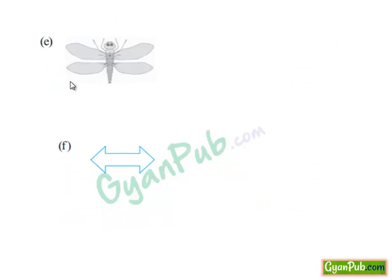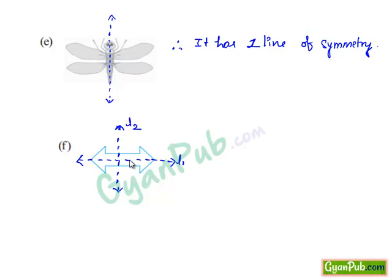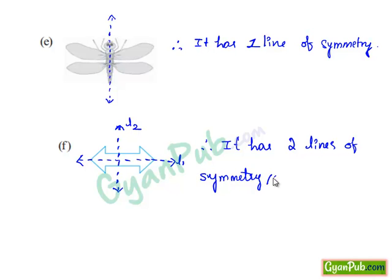If we see part E, here is a butterfly and it can be divided only vertically to make it identical. Therefore it has one line of symmetry. Seeing part F, dividing this shape horizontally, it is identical, hence it has one line of symmetry there. And if we divide it vertically, it is also identical. Hence it has two lines of symmetry — one vertical (L2) and one horizontal (L1).